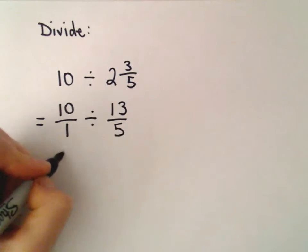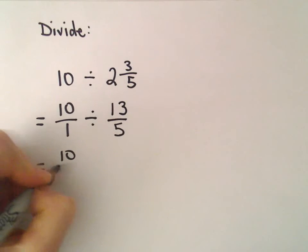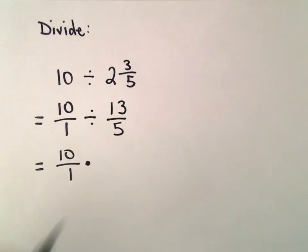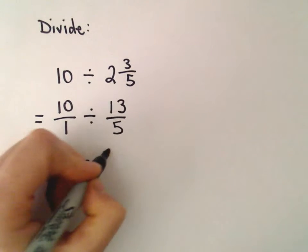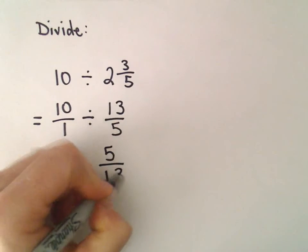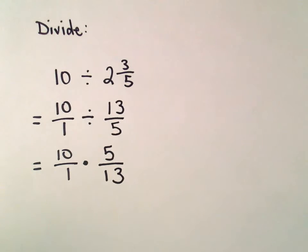I leave my first fraction alone. Division becomes multiplication, and then we flip our fraction over — we use the reciprocal of 13 over 5.